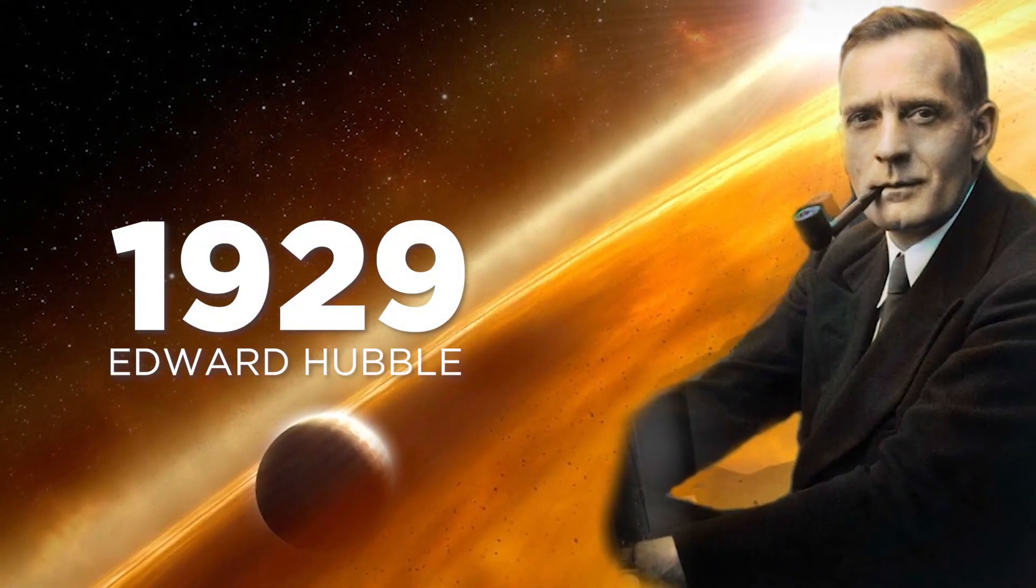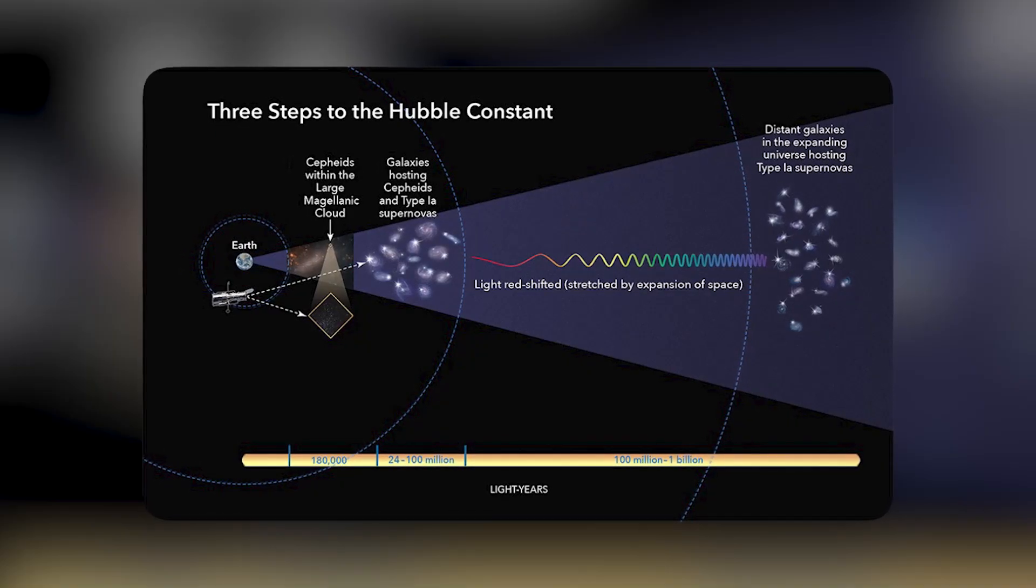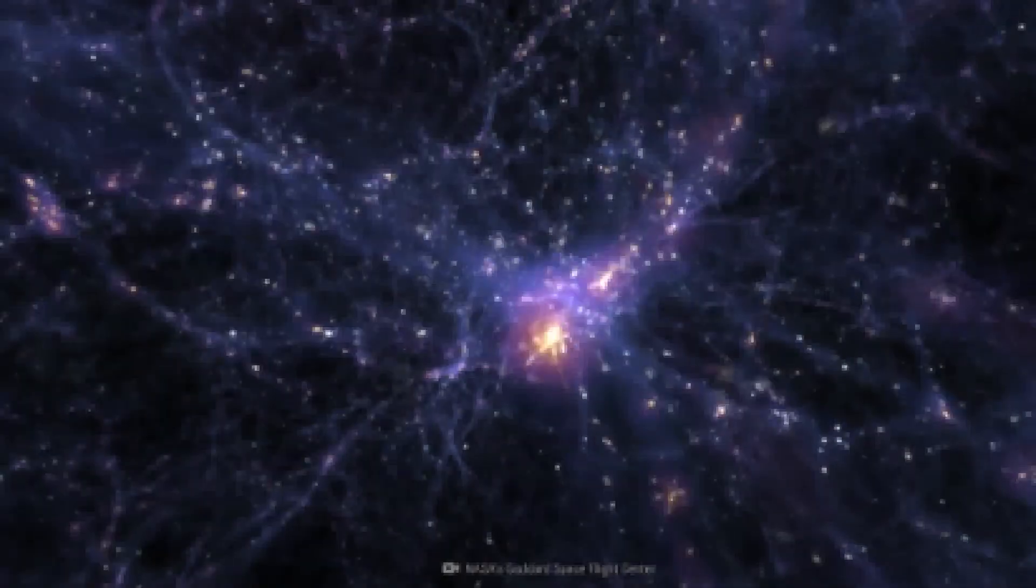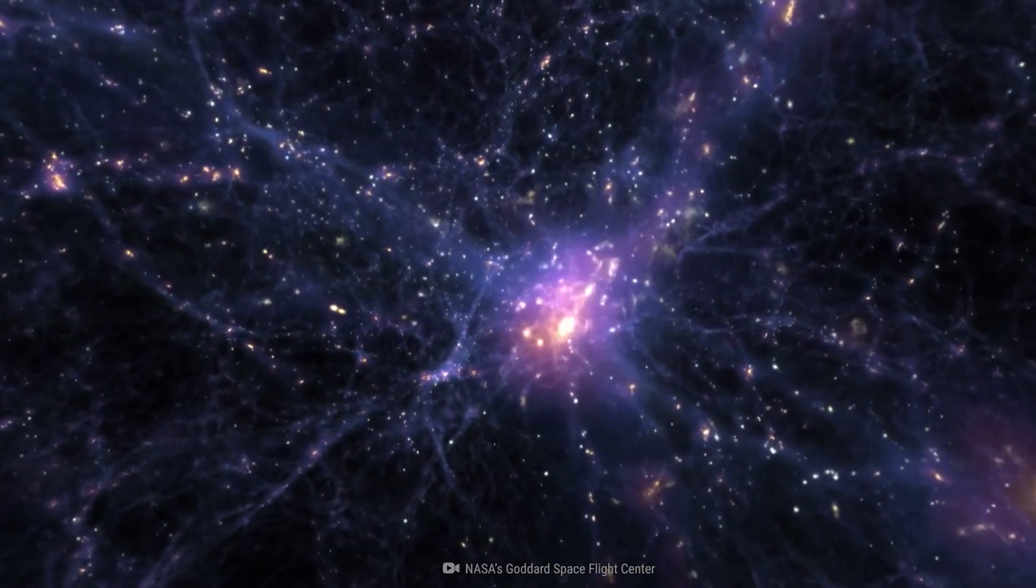In 1929, Edwin Hubble noticed how the wavelengths of light coming from distant galaxies showed a large degree of red shift. Hubble deduced that this was because the universe itself was expanding.